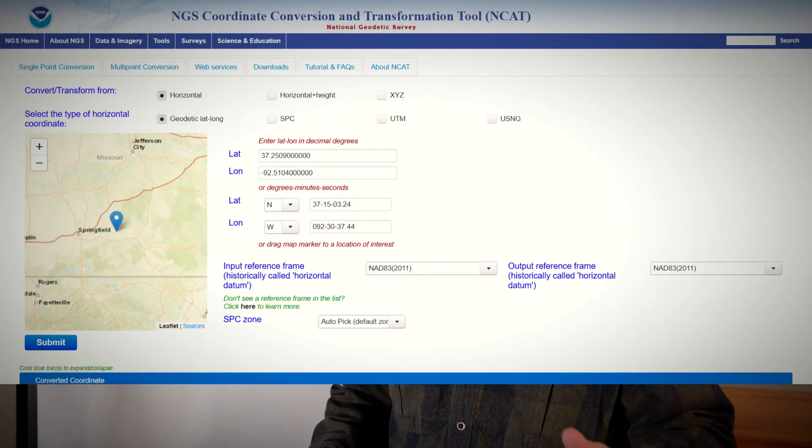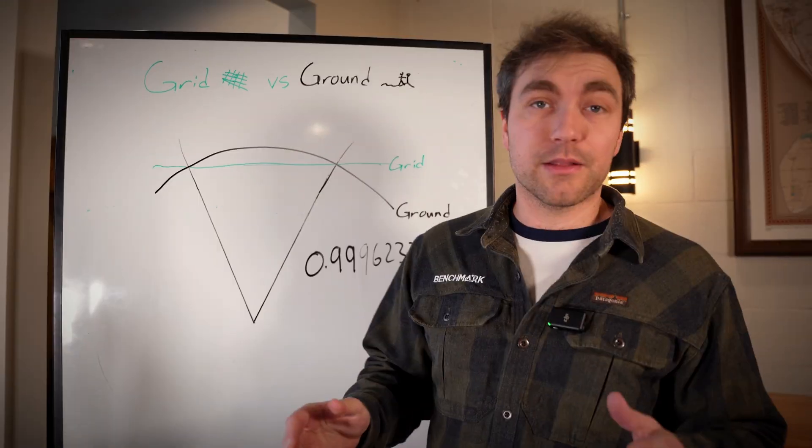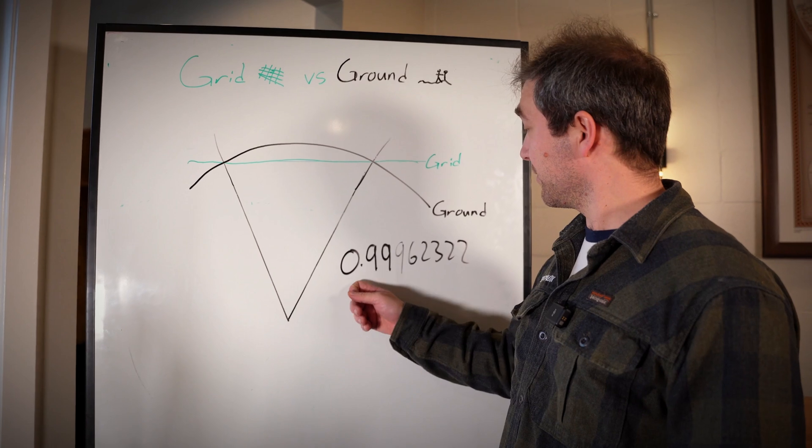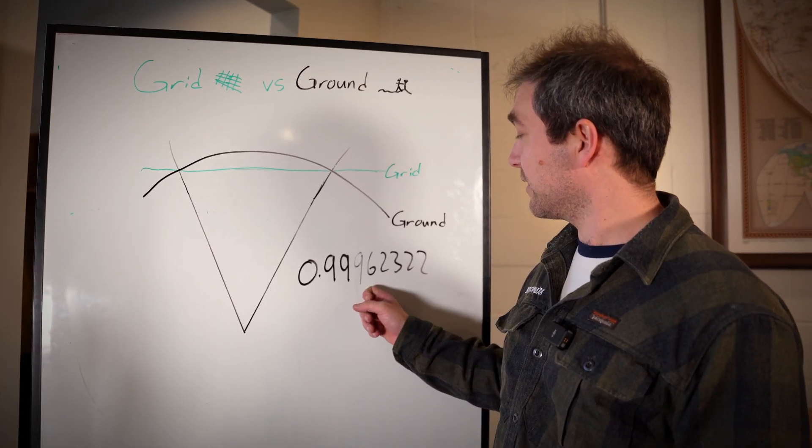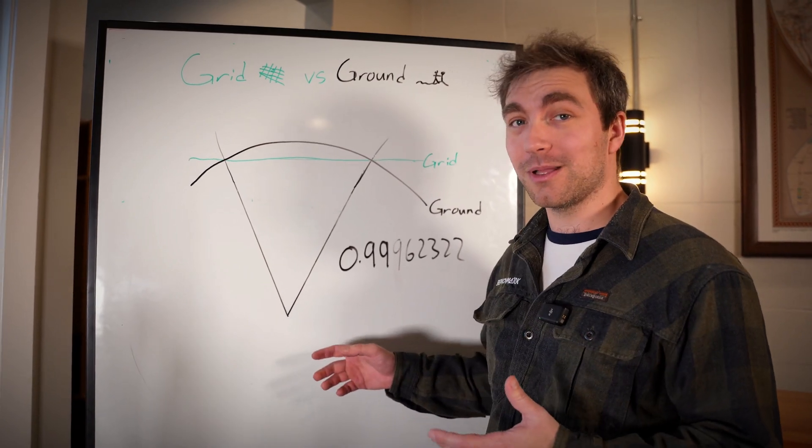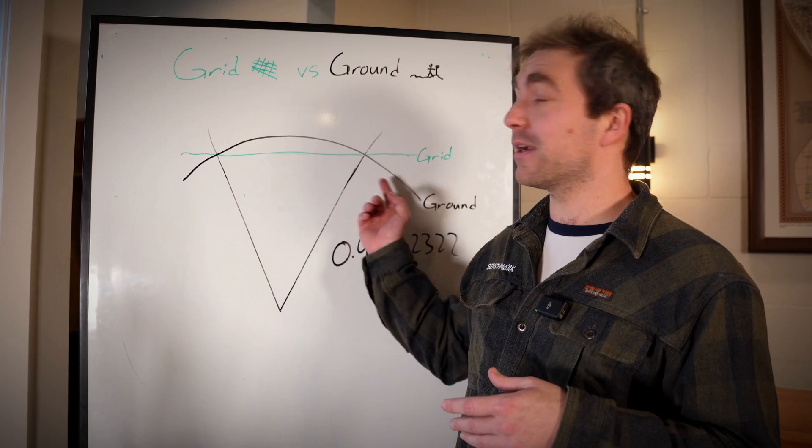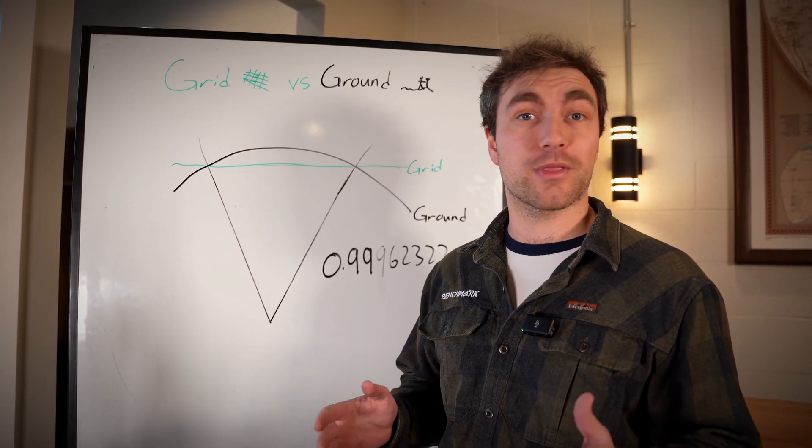If you take this coordinate that I have, for example—it's just a spot in Missouri—this coordinate has a scale factor of 0.99962322. If I was going to do a one kilometer job with this scale factor, I would already be seeing a difference between my grid distance and my ground distance of more than a foot.